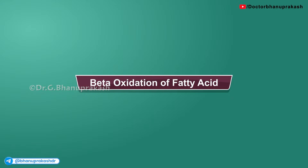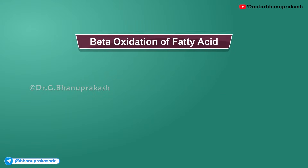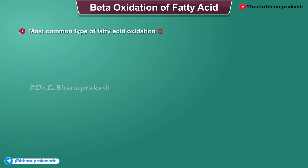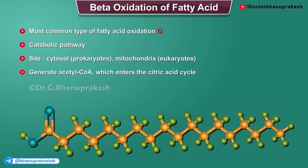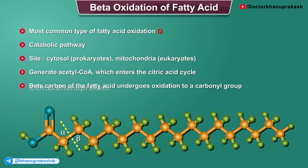Beta Oxidation of Fatty Acids. Beta oxidation is the most common type of fatty acid oxidation. It is the catabolic pathway by which fatty acids are broken down in the cytosol in prokaryotes, and in the mitochondria in eukaryotes, to generate acetyl coenzyme A, which enters the citric acid cycle. It is named as such because the beta carbon of the fatty acid undergoes oxidation to a carbonyl group.